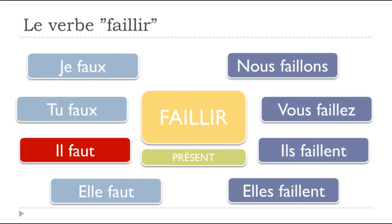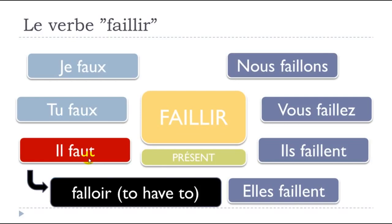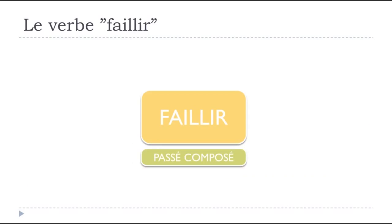If you look carefully, you'll notice something quite strange — there is a form you should already know. It's actually the verb falloir, meaning 'to have to.' Remember, falloir is what we call impersonal — you only get the 'il' form: il faut. It is exactly the same form. When you encounter 'il faut' in a text, in most cases it will be connected to falloir, but keep in mind it might also be connected to faillir, even if we don't use the present form very often.